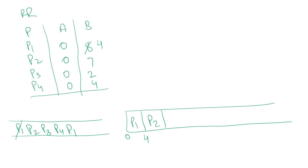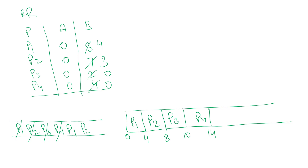P1 is popped and pushed to the back. Next, P2 executes for four milliseconds up to eight milliseconds, reducing its remaining burst time to three, and is then pushed to the back. Next, P3 executes for just two milliseconds up to ten milliseconds — we take the minimum of burst time and time quantum — so it completes with remaining burst time of zero and is removed from the queue. Then P4 executes for four milliseconds up to fourteen milliseconds, completes, and is removed.